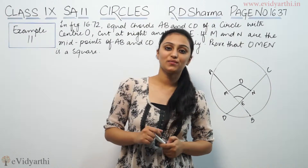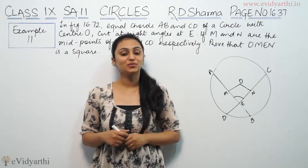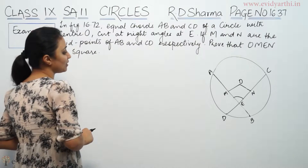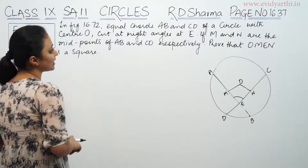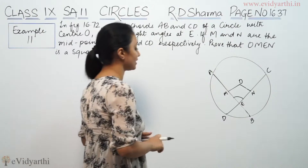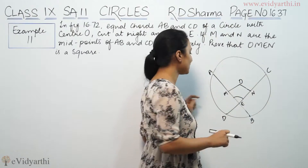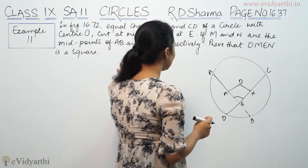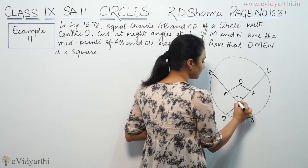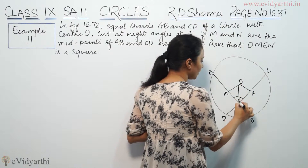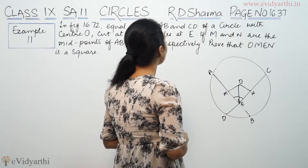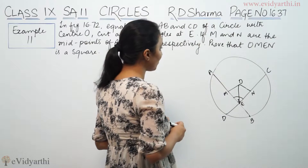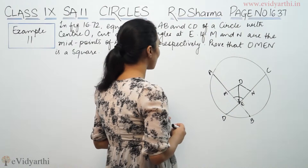Hi, this is Khushpoo with another question on circles. This is example 11 from page number 16.37 of RD Sharma. The problem says: in figure 16.72, equal chords AB and CD of a circle with centre O cut at right angles. M and N are the midpoints of AB and CD respectively. Prove that O, M, E, N is a square.